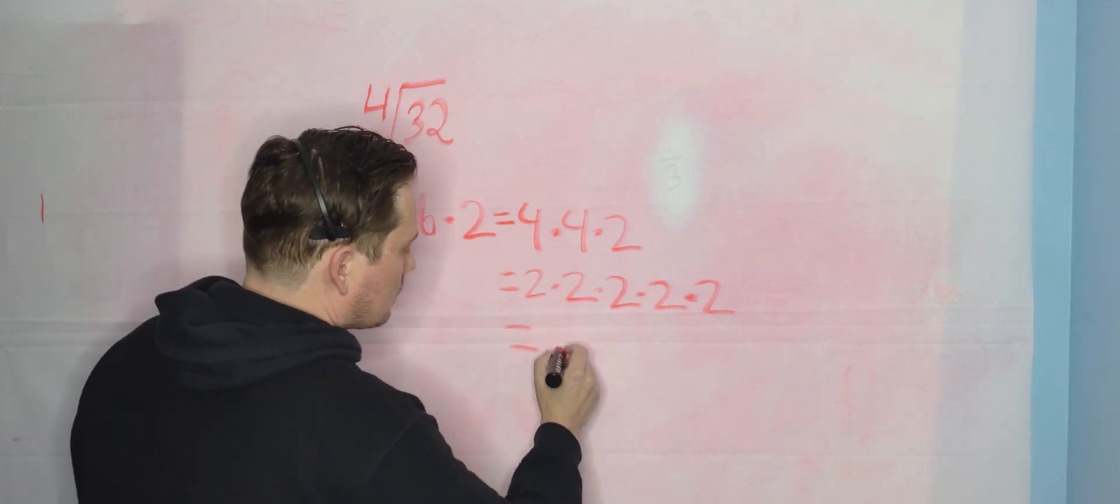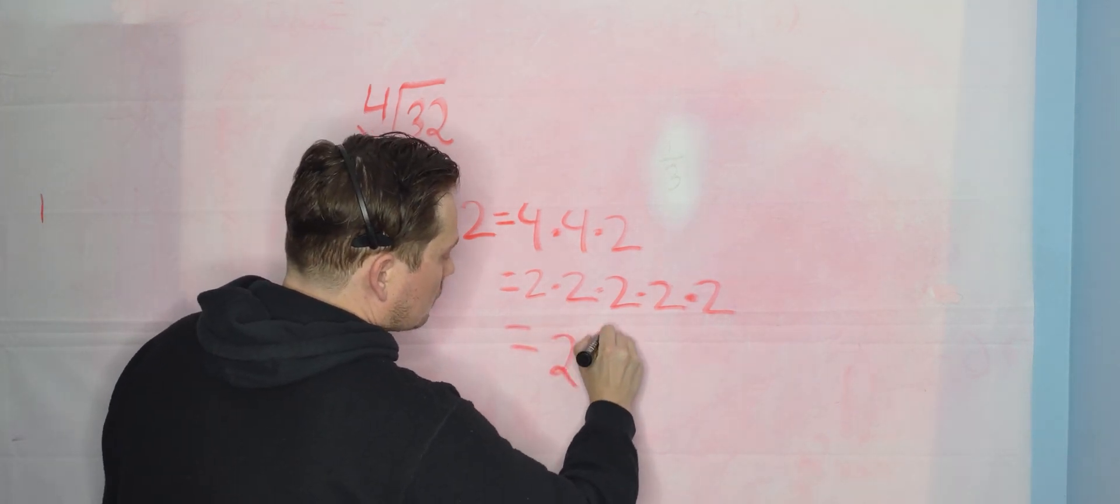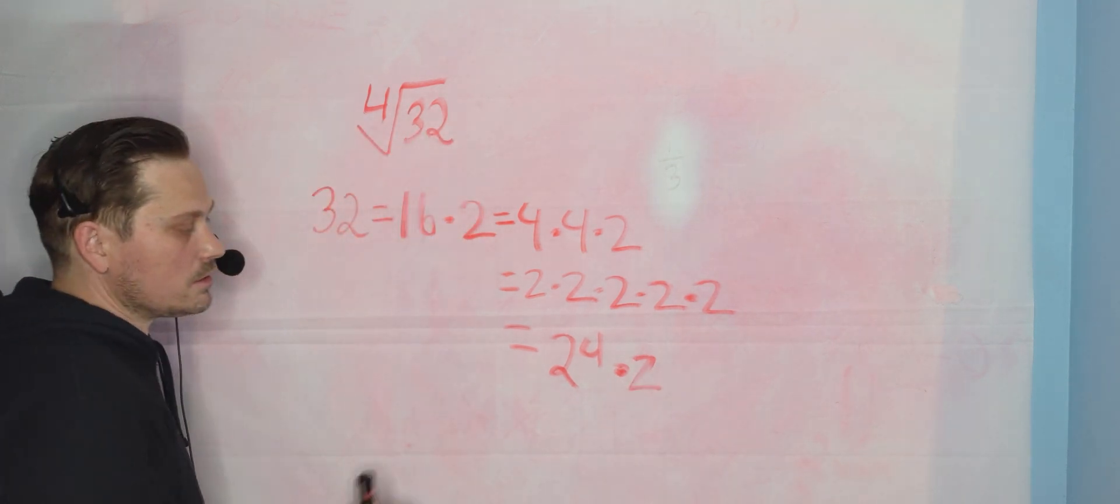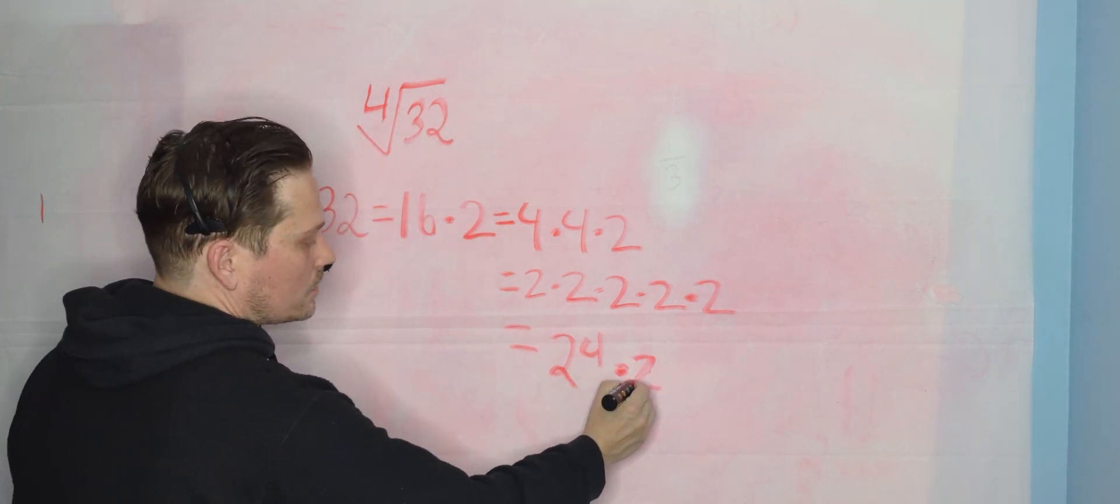So what does that tell us? It tells us that I can write this now as 2 to the 4th times 2. So 2 to the 4th times 2. This is a 2 here, not a z.